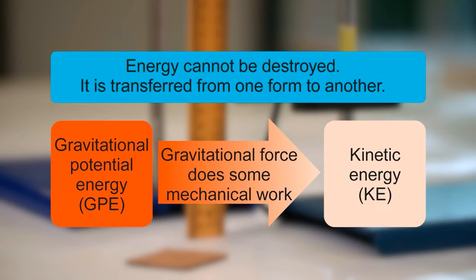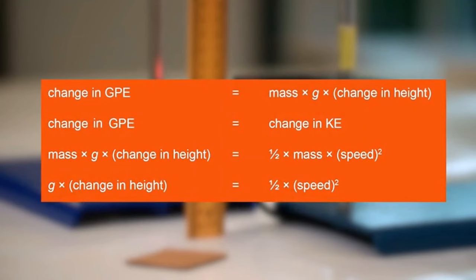Gravitational potential energy is transferred during the fall into kinetic energy. In this investigation, air resistance was negligible. Therefore, the gravitational force transferred almost all available gravitational potential energy into kinetic energy by doing some mechanical work. If it is assumed that all the change in gravitational potential energy is transferred into kinetic energy, the energy transfer can be mathematically shown like this.